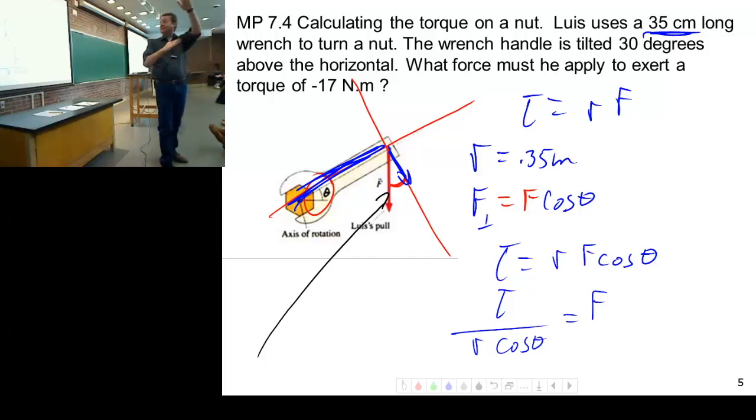So it has to be perpendicular to the wrench. And the wrench is like this, and that's like this, so I need that component. Does that make sense? Good question.